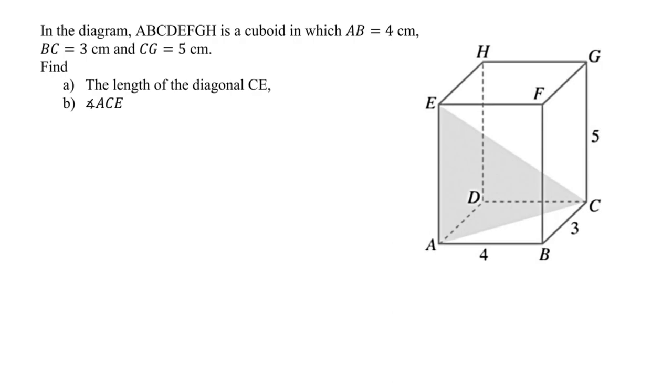At first glance you might not be able to see it, but this particular triangle is actually a right angle triangle because E is vertically above A and AC is on a horizontal plane.